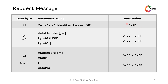The request message format starts with service ID 0x2E, followed by the data identifier of 2 bytes, and then n number of data bytes or data records. It could be a minimum of 1 byte of data and a maximum of the allowable limit from the ECU memory.